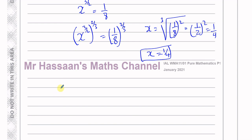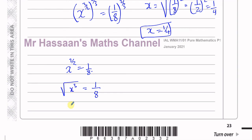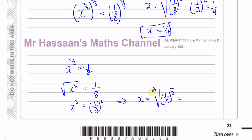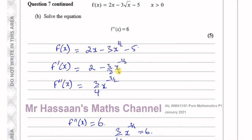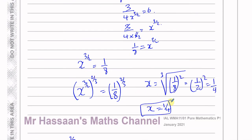Alternatively, from x to the power of 3 over 2 equals 1 over 8, I can rewrite this as the square root of x cubed equals 1 over 8. Squaring both sides gives x cubed equals 1 over 8 squared, then cube-rooting both sides gives x equals the cube root of 1 over 8 squared. The cube root of 1 over 8 is a half, and a half squared is a quarter — the same answer. The important thing is finding the second derivative and knowing how to solve the resulting equation.